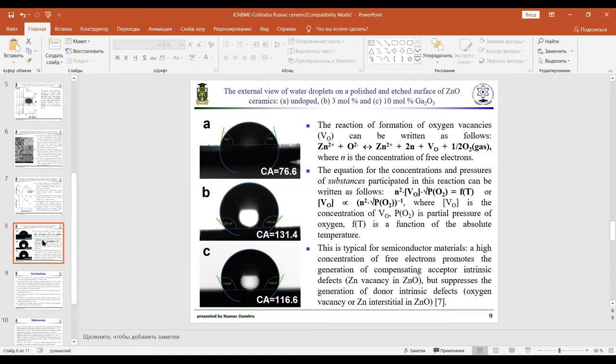As is typical for semiconductor materials, high concentration of free electrons promotes the generation of compensating acceptor intrinsic defects such as zinc vacancies in zinc oxide but suppresses the generation of donor defects such as oxygen vacancies or zinc interstitials in zinc oxide.